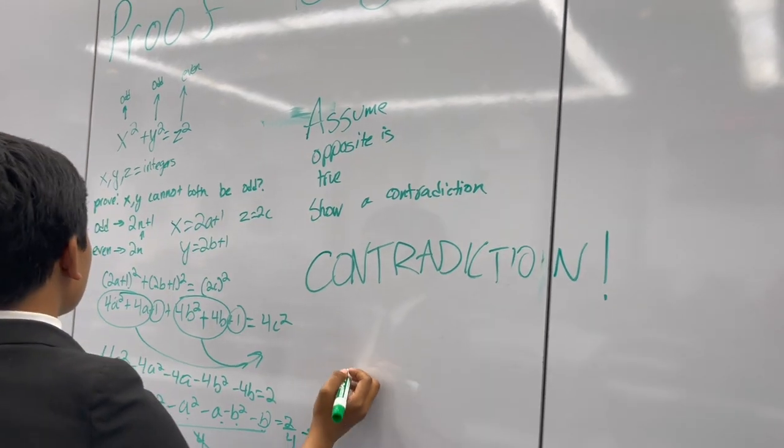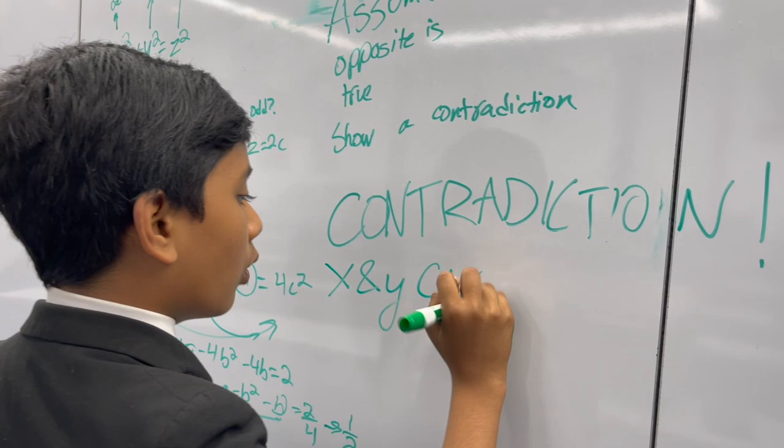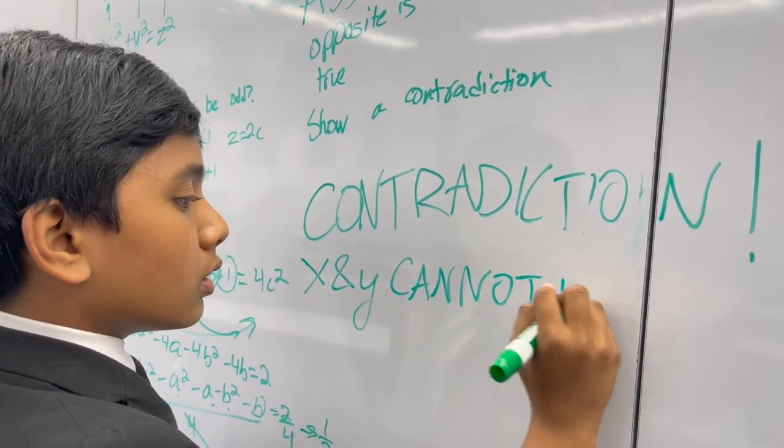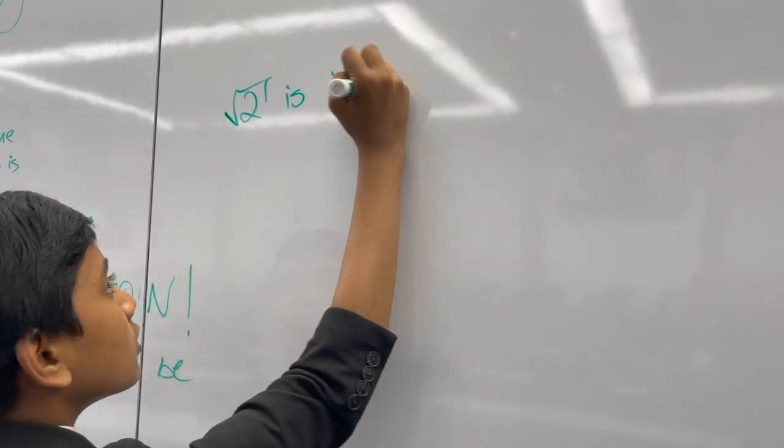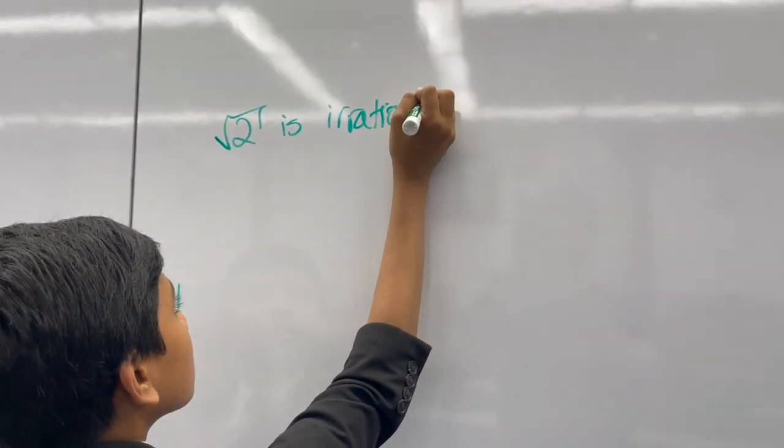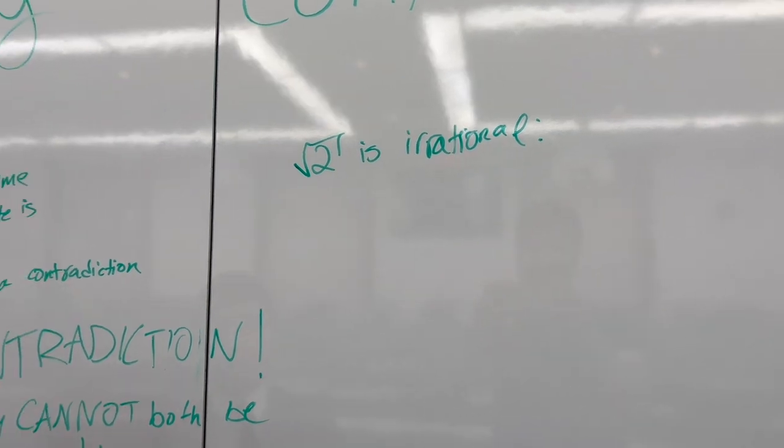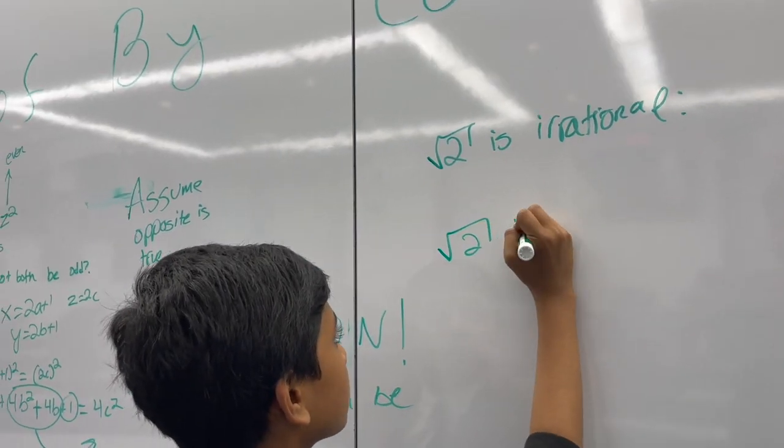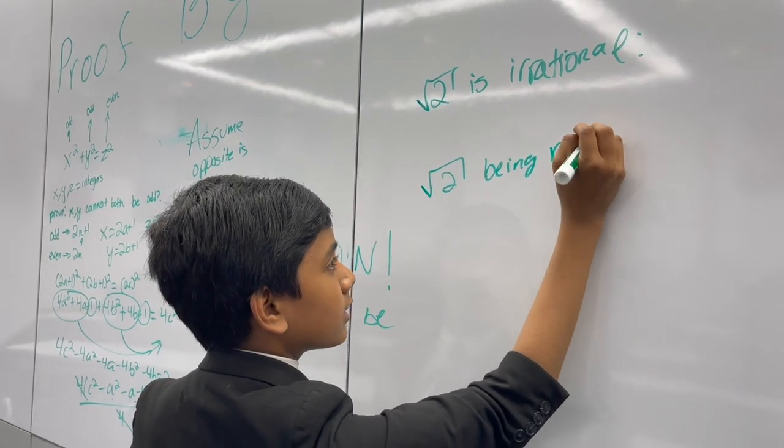So that means we have proved x and y cannot both be odd. We're going to be proving that root 2 is irrational. The thing is, this proof relies on root 2 being rational, the opposite case, and now we're going to show how that can't be true.